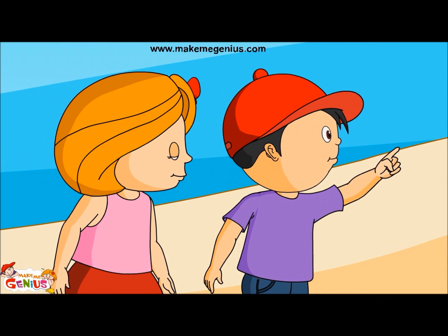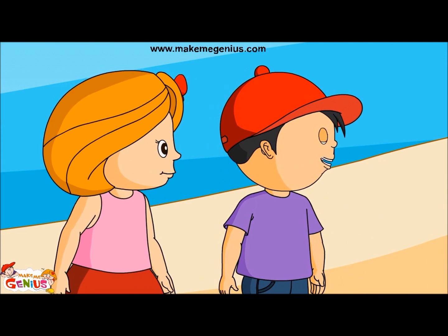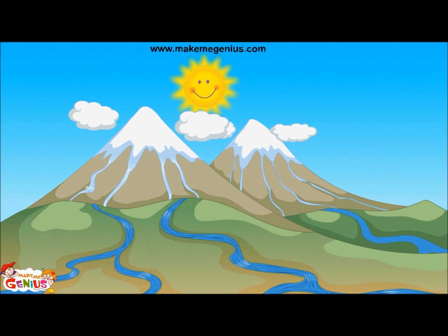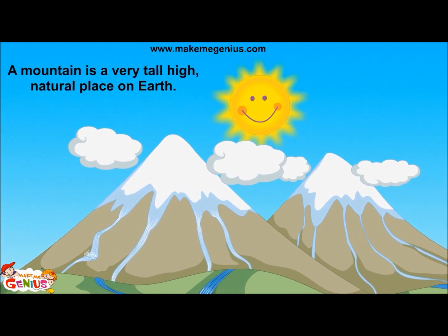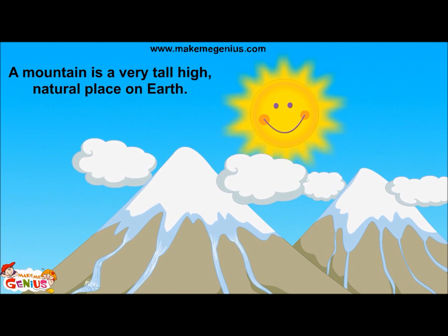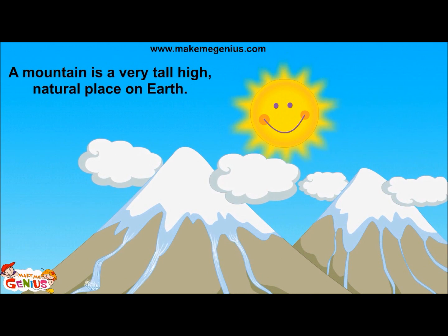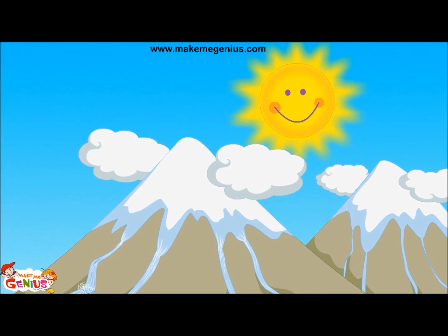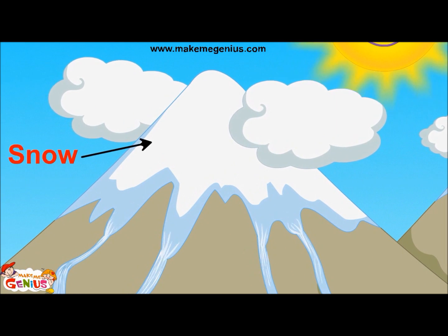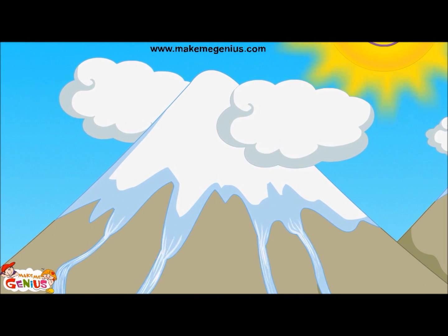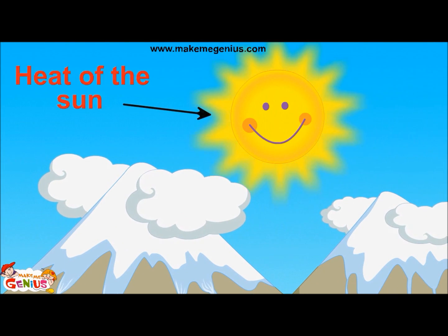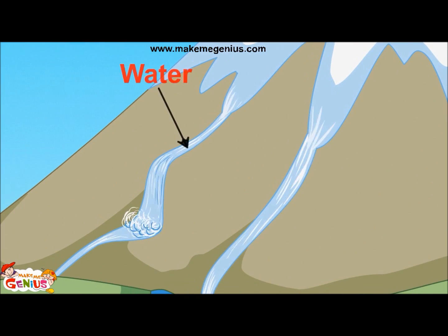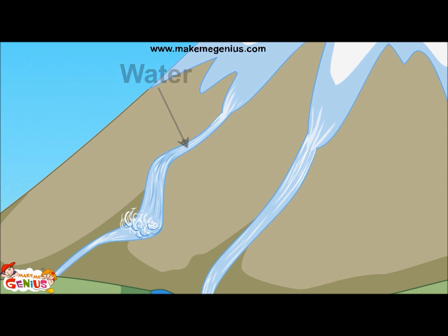It is very high and also it has snow over it. This is called a mountain. A mountain is a very tall, high natural place on earth. Look, there is a mountain with a lot of snow over it. This snow melts due to the heat of the sun. The water starts coming down the mountain. When water falls from a height, it is called a waterfall.